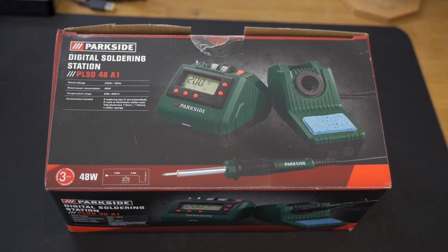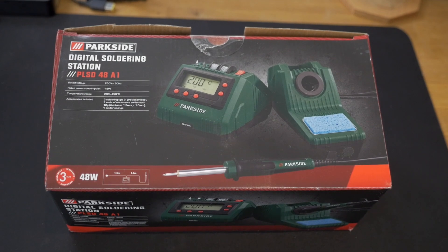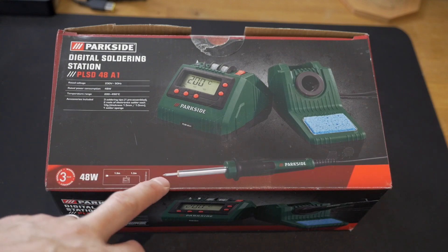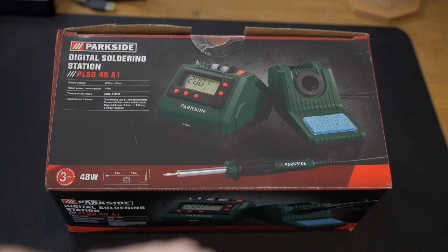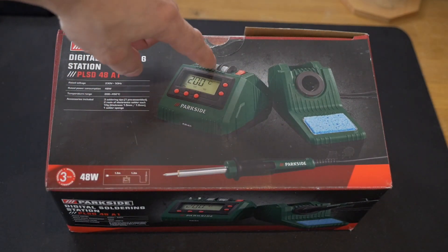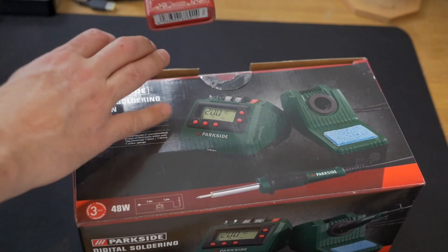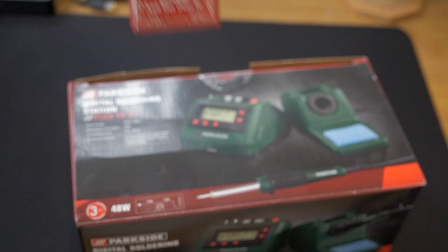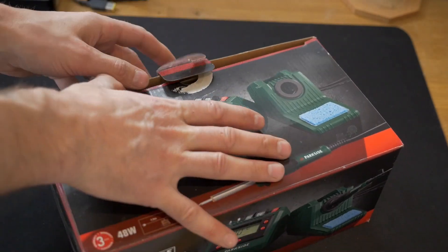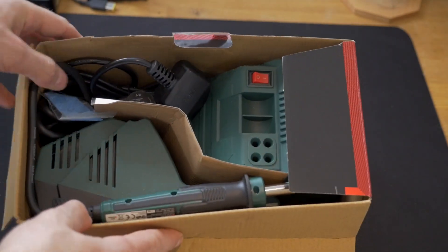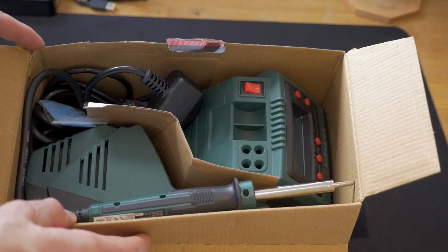Here we are, guys. This is the Parkside digital soldering iron PLSD-48A1 and probably about 30 quid for this. The reason I like it so far is that it's 48 watt, it's got a really thin tip, it's got some cleaning pads here and a place to put your solder on and an area to put your actual solder. So let's crack this box open, let's see what's in it. By the way, who wants a mint? I love mints. Opening up the box. We'll take everything out and then we'll go through the components.